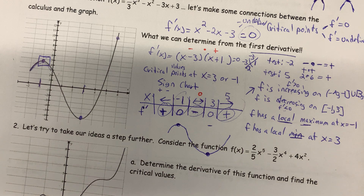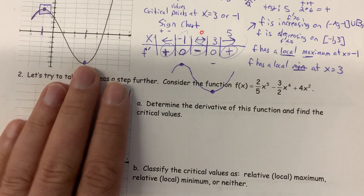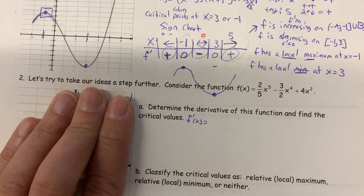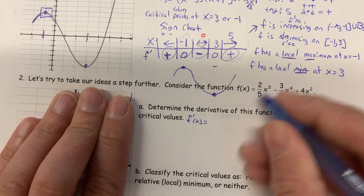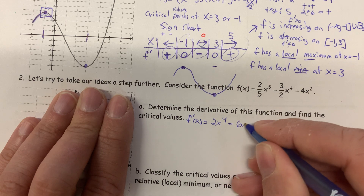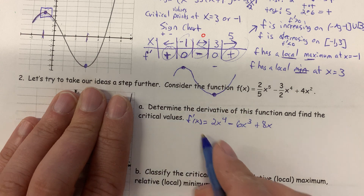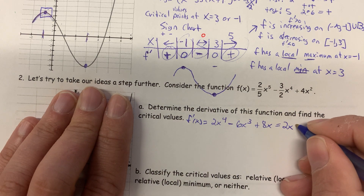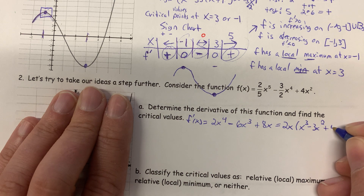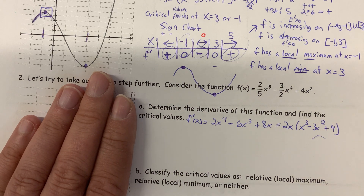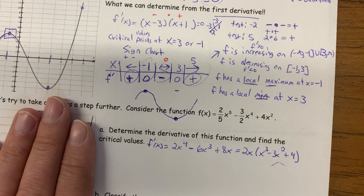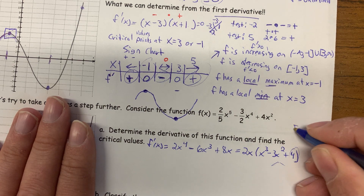A lot of this comes up on the free response portion of the AP exam, so you need to write out justifications. The format is: 'f has a local max at x = −1 because f prime changes from positive to negative.' You can write out 'positive' and 'negative' or use circled signs. The key is including the word 'because' and describing the sign change of f prime. 'At x = 3, f has a local min because f prime changes from negative to positive.'